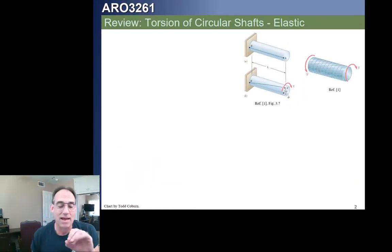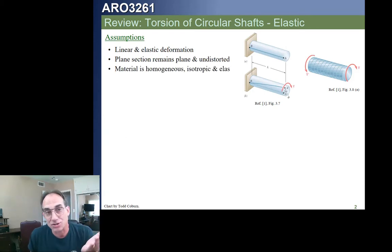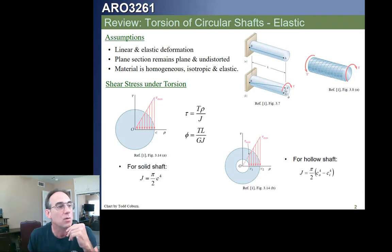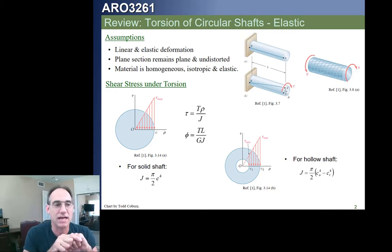We saw last time how torsion affects a circular shaft. We learned about the assumptions, how to calculate the stresses, and how to calculate the angles of twist. The stress distribution, as with the strain distribution, is linear. We have a linear distribution from the center to the maximum radius. Our stress is TR over J, with the maximum at the surface. Our angle of twist is TL over GJ, where G is the modulus of rigidity, and J is the polar moment of inertia for round sections.